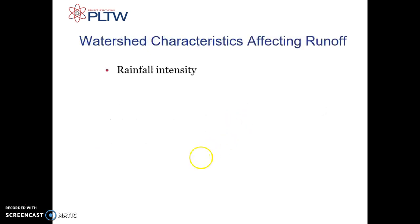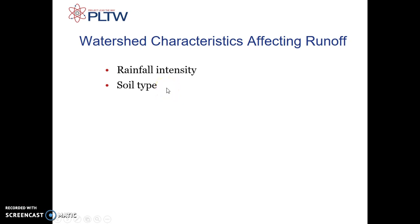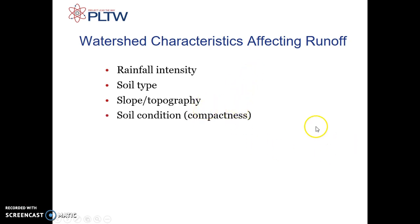Watershed characteristics that affect runoff include rainfall intensity, the type of soil — my house is built on a lot of clay, and clay doesn't absorb water as quickly as regular soil does. Also the slope and topography of your land, since water flows from the high spot to the low spot. Soil condition matters too — how compact is the soil? If you dig an area up, it's going to take more water than if it isn't freshly dug.